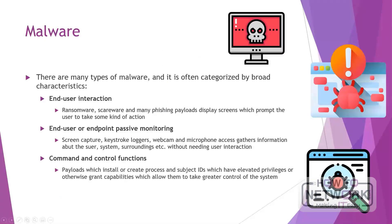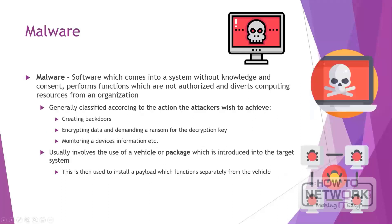There are many different types of malware and it is often useful to categorize them by broad characteristics. For example, end user interaction — ransomware, scareware and many phishing payloads display screens which attempt to get users to take some kind of action. End user or endpoint passive monitoring — screen capture, keystroke loggers, webcam and microphone access can gather information about the user, the system, and its surroundings without needing the end user to take any actions. And command and control functions — these are payloads which look to install or create process and subject IDs which have elevated privileges or otherwise can grant capabilities allowing them to take greater control of the system.